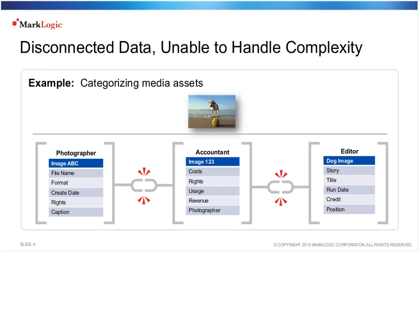Here's an example playing out at media and publishing companies. You see a picture of a dog — a media asset — with various roles listed, and each one has their own independent way of categorizing that image and its metadata. Sharing the image outside the department becomes really problematic because the language doesn't align. Each person has their unique perspective about the image, all valid, but if you're trying to categorize assets in a central repository, how do you do that while still making it possible for a particular searcher like an editor to find data in a way that makes sense to them? Imagine that same problem played out among hundreds of thousands of assets and dozens of data repositories.